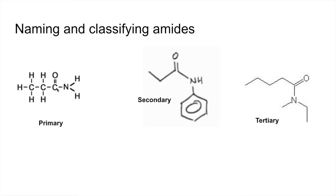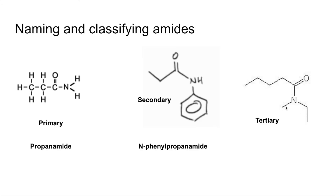Very quickly: the first N is bonded to one carbon directly; the second N is bonded to two carbons; the third N is bonded to three carbons. In terms of names: the first one, with three carbons, is called propanamide. The secondary one has a phenyl group on the nitrogen of propanamide, so it's called N-phenyl propanamide. The tertiary amide has an ethyl group and a methyl group on the nitrogen of an amide with five carbons, so that's N-ethyl N-methyl pentanamide — with E coming before M alphabetically.